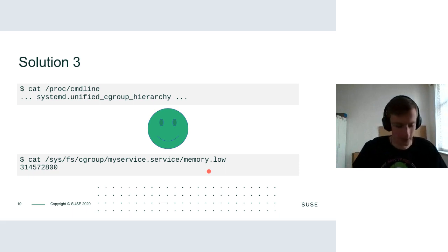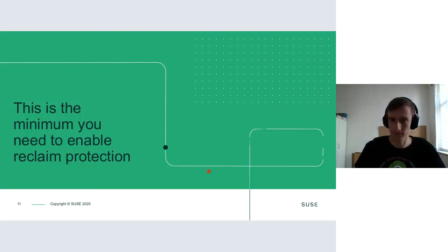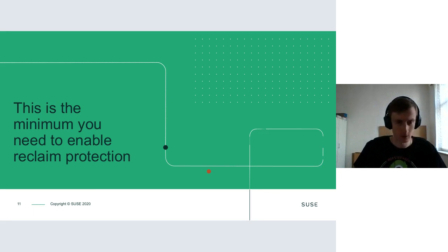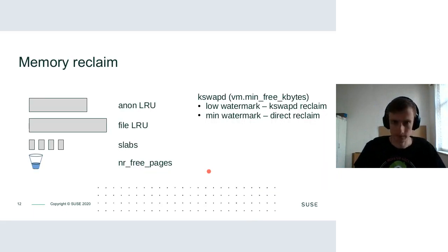We can check it by printing out the attribute value. So that's the high-level point of view, and now we will look more into the details of how this works.